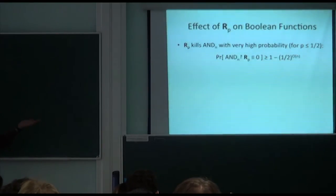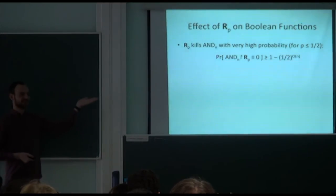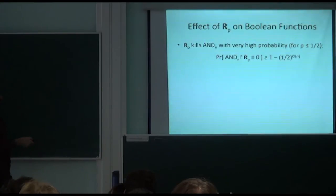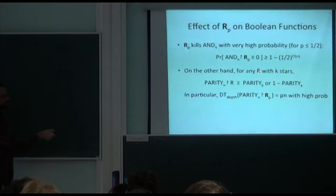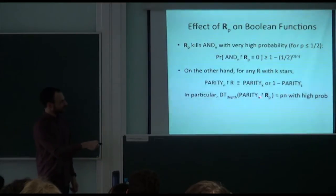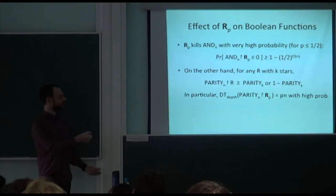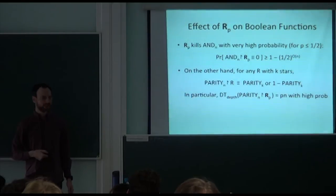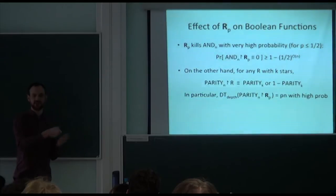For the AND function on n variables, a random restriction R_p will set it to the constant 0 with high probability if p < 1/2. On the other hand, applying any restriction with k stars to the parity function yields either a parity function or its negation on those k variables. Consequently, hitting the n-variable parity function with R_p gives back a function with decision tree depth close to p·n with high probability, so parity remains complex under random restrictions.